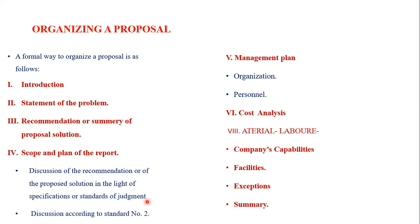For a civil engineering project like a plaza, the quality points include land, material, fixing, and finishing. The writer must explain what scheme or tools they have to ensure and maintain these quality standards. This leads into the management plan, which is divided into two main things: organization and planning. For a software project, the major steps include database, web API, layout designing, and integration and testing. Against every phase, the proposal specifies team leads and responsible personnel.